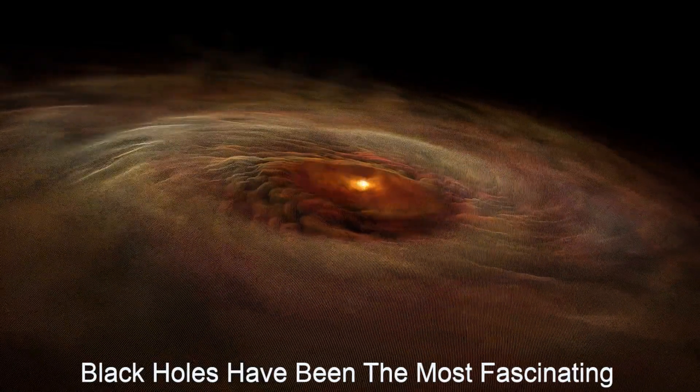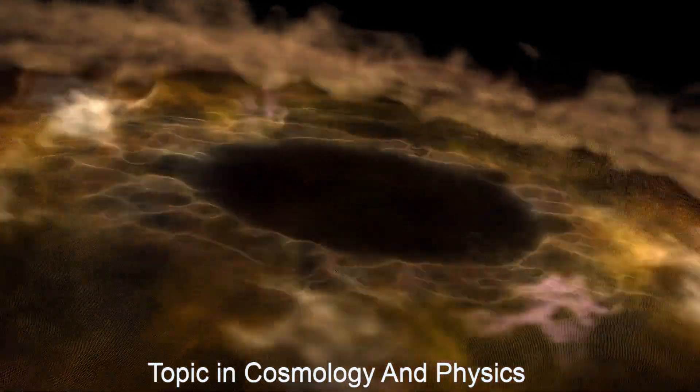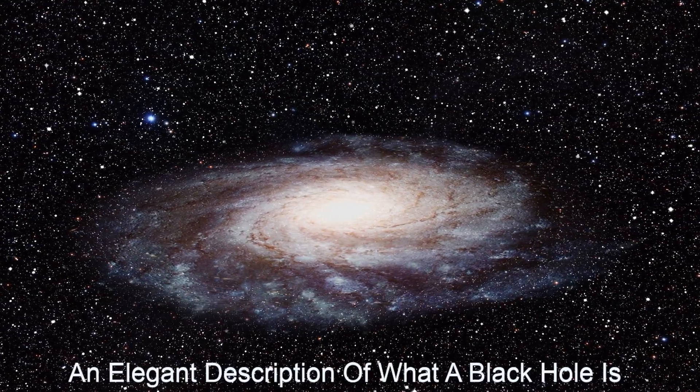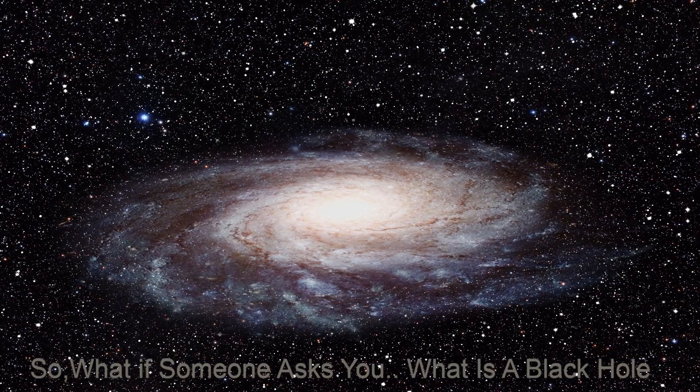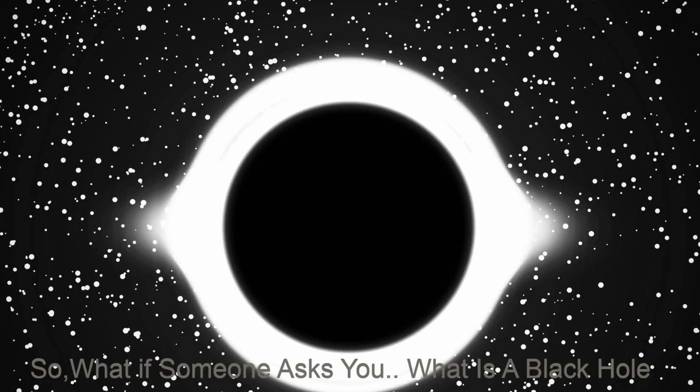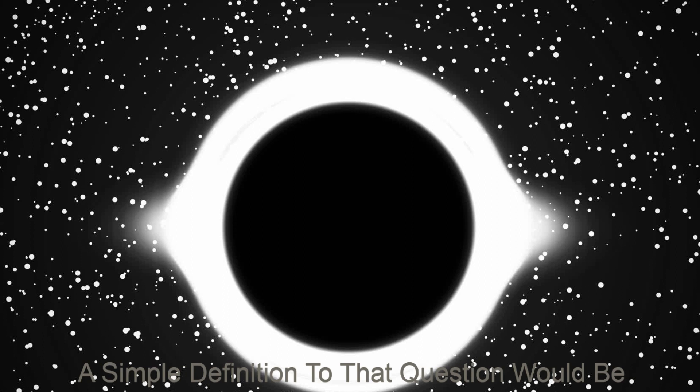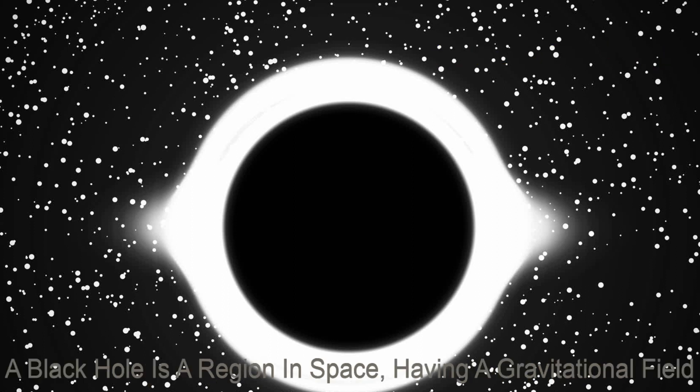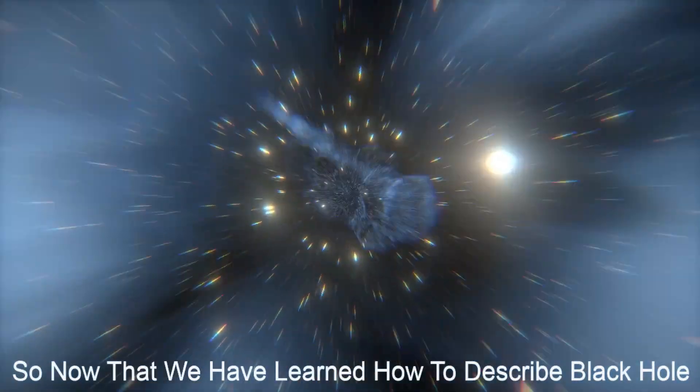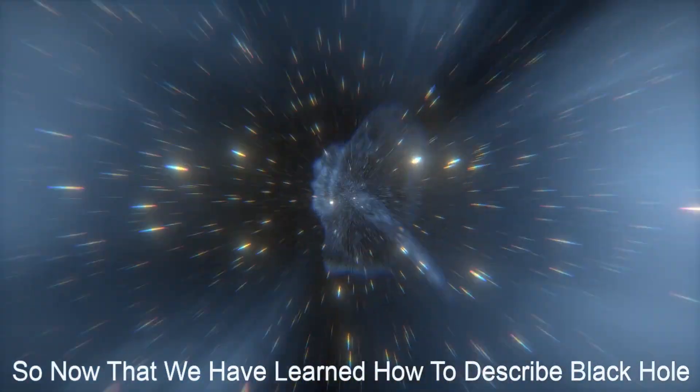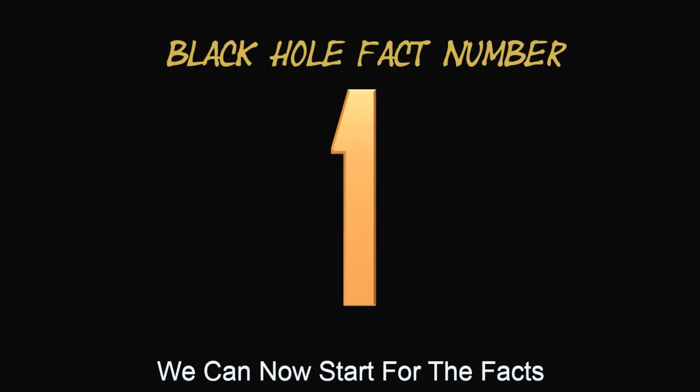Black holes have been the most fascinating topics in cosmology and physics. Before starting the facts, you should know an elegant description of what a black hole is. So what if someone asks you what is a black hole? A simple definition would be: a black hole is a region of space having a gravitational field so intense that no matter or radiation can escape. So now that we have learned how to describe a black hole, we can now start with the facts.